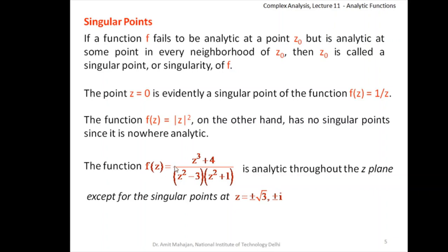Consider f(z) = (z³ + 4) / [(z² − 3)(z² + 1)]. This is a polynomial divided by a polynomial, so it is analytic throughout the complex plane except at the points where the denominator is zero, i.e., where z² − 3 = 0 or z² + 1 = 0. Those points are z = ±√3 and z = ±i. At these points the function is not analytic, and everywhere else it is analytic, so these points are singular points. The points that make the denominator zero are the singular points.